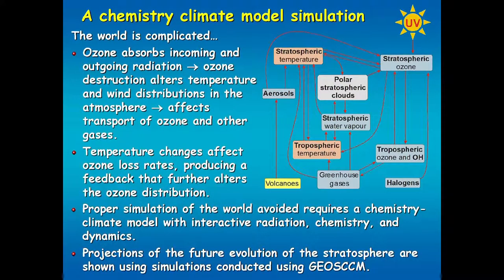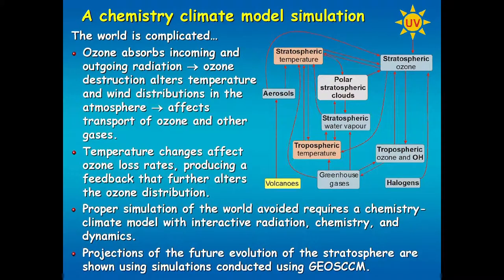A chemistry climate model is a climate model that includes simulation of stratospheric chemistry. You run that model forward — let's say for a hundred years — and it might take a few months on a supercomputer, because you're going in 15-minute time steps; it's very, very complicated. I've taken such a simulation using the GRCCM, a chemistry climate model run in the U.S., and I'm going to be showing you results from that simulation.